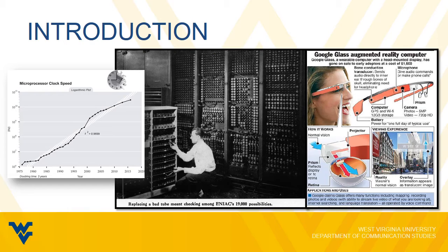The ENIAC was a computer roughly the size of a room. It ran off a series of over 19,000 vacuum tubes that, set in different configurations, could do relatively basic calculations — such as tracking the trajectory of a missile or helping a physicist solve an equation, relatively advanced mathematics. But it was essentially limited to being a computer: something that computes the answers to problems.